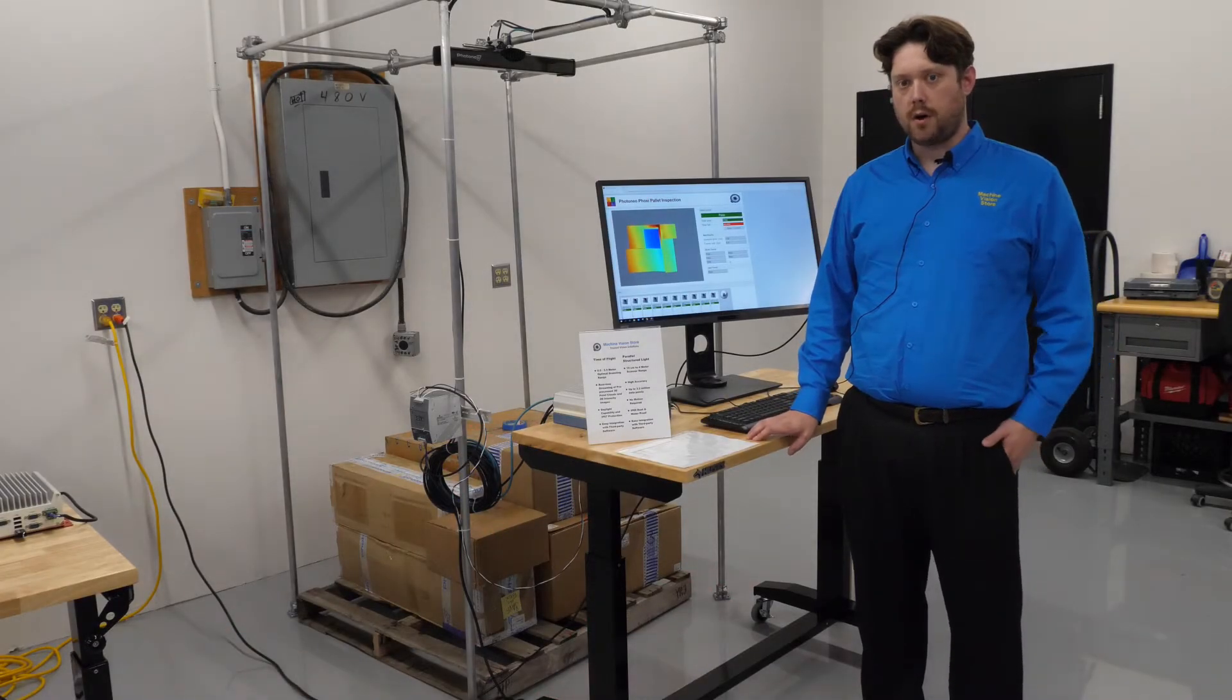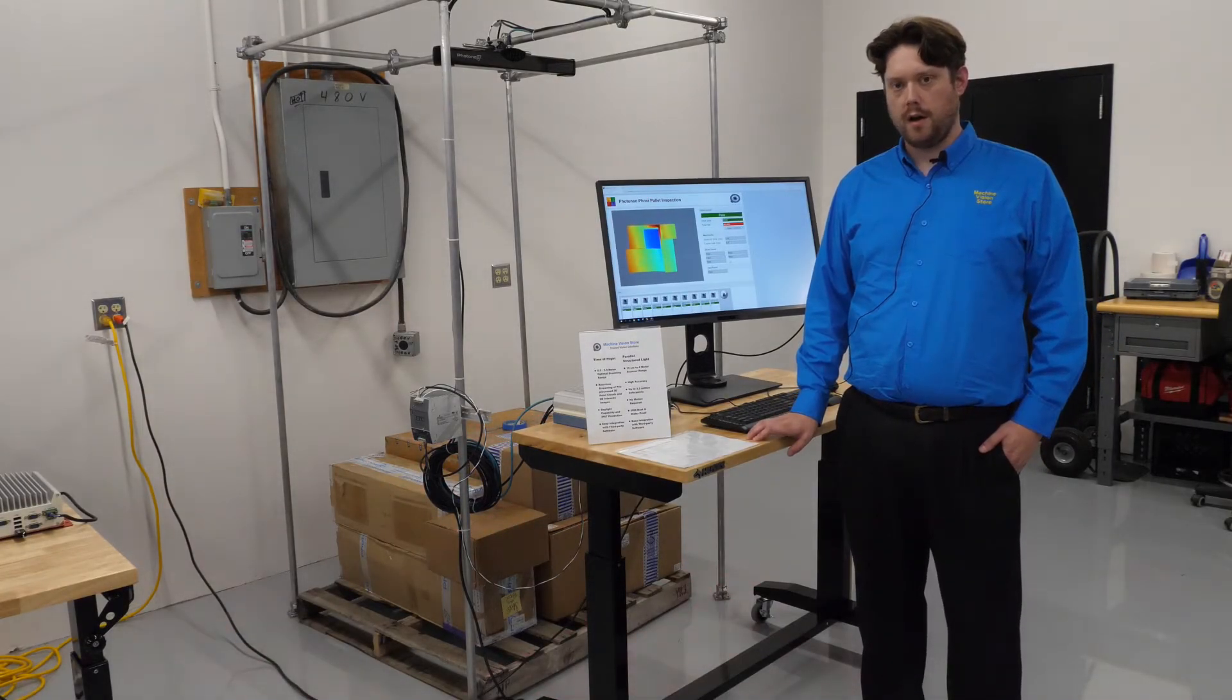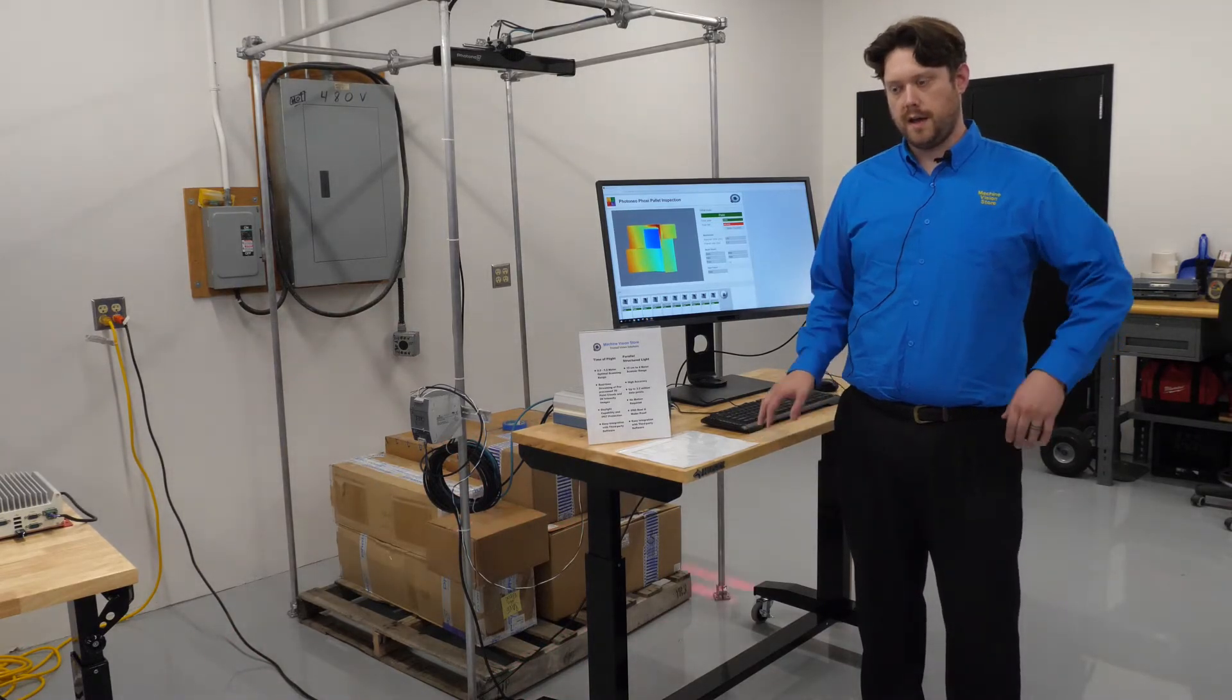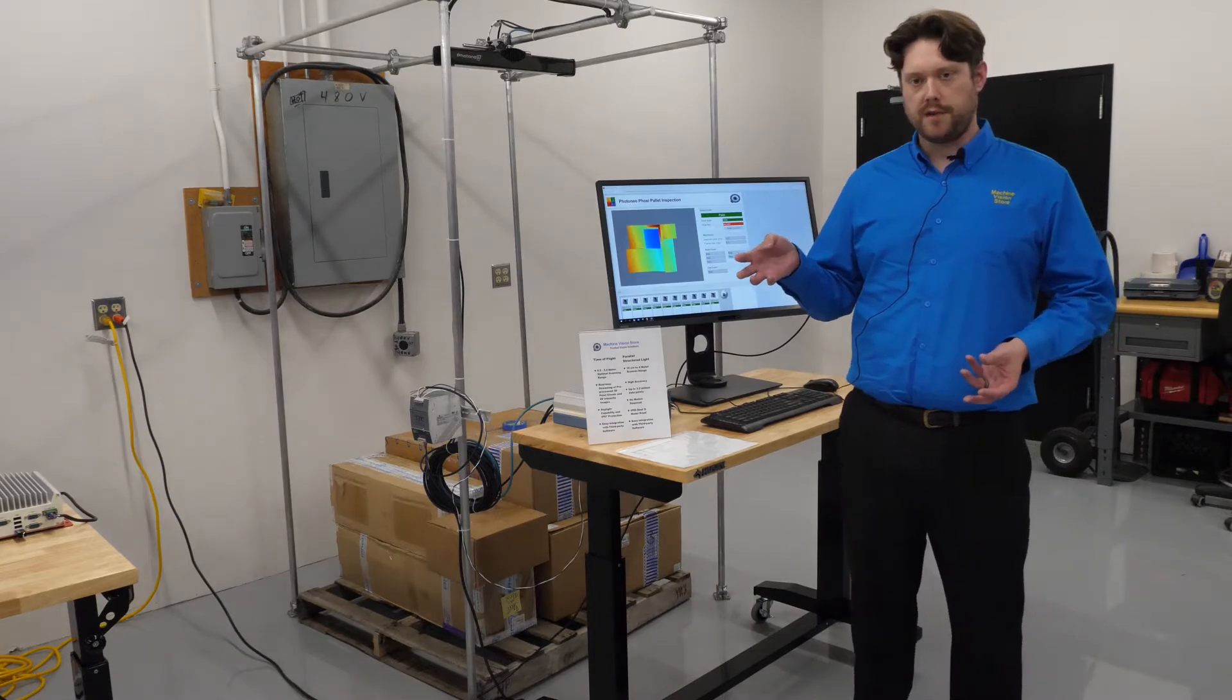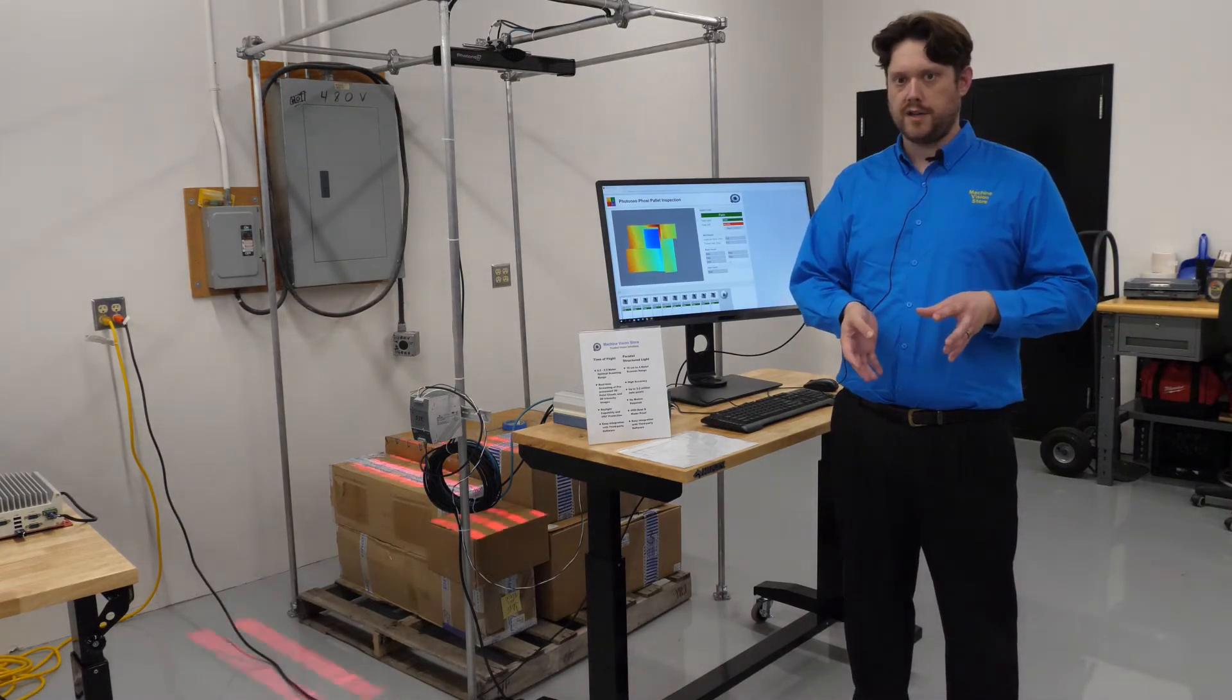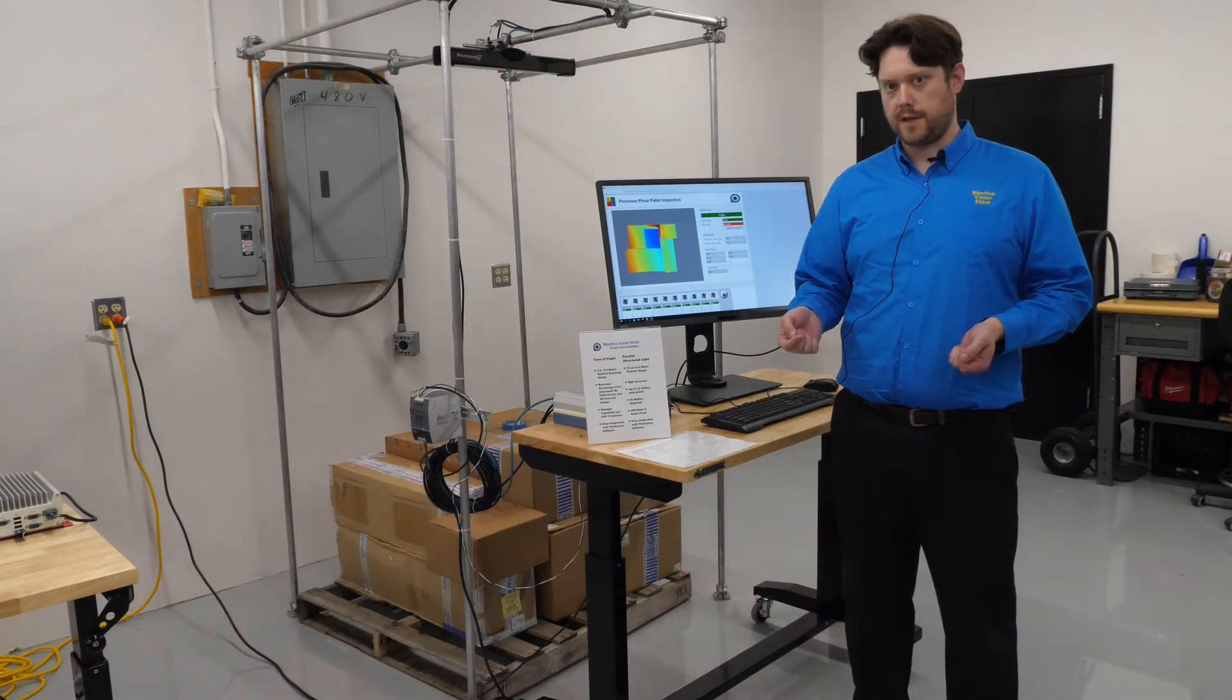Photoneo also offers a unique software called Bin Picking Studio. What is unique about Bin Picking Studio is it can pick an object that is overlaying on top of another object as well as in any orientation, and we can also pick highly reflective objects.